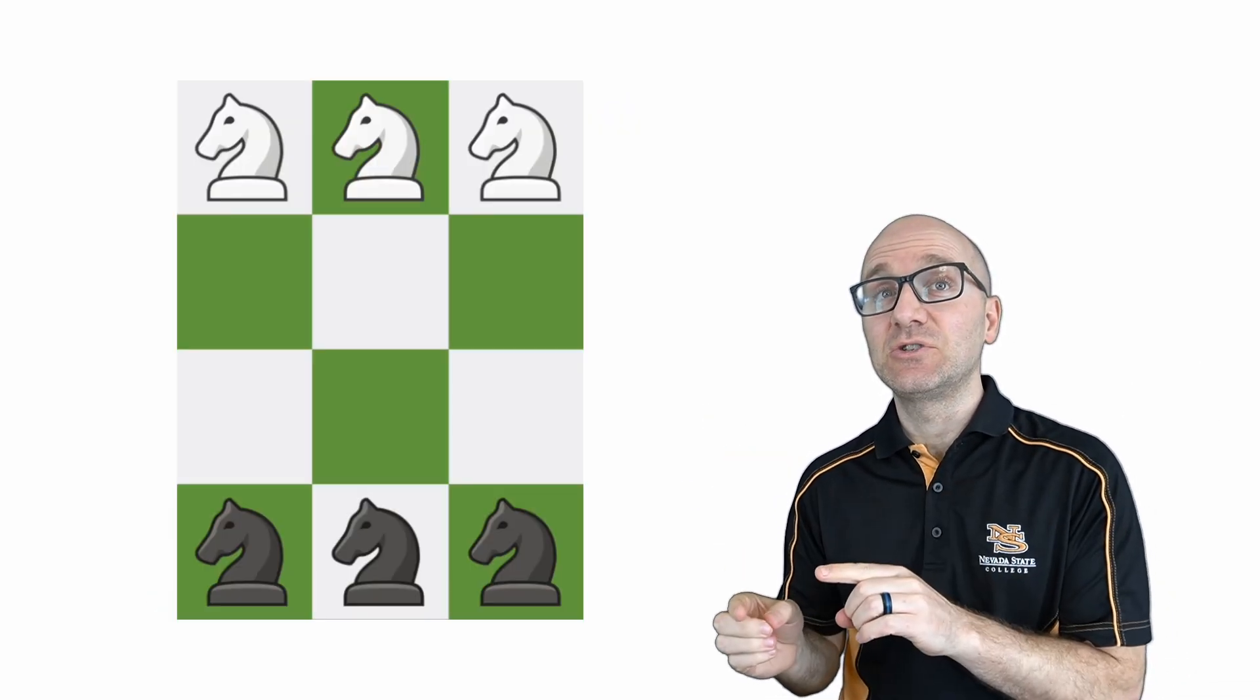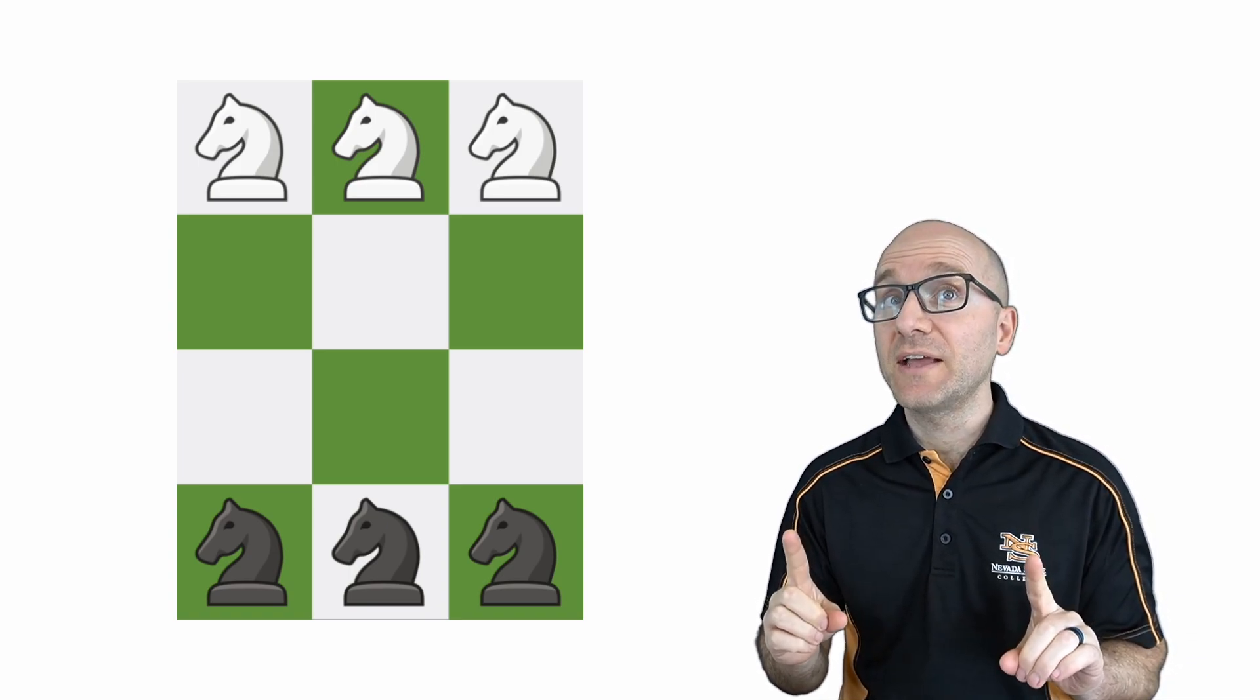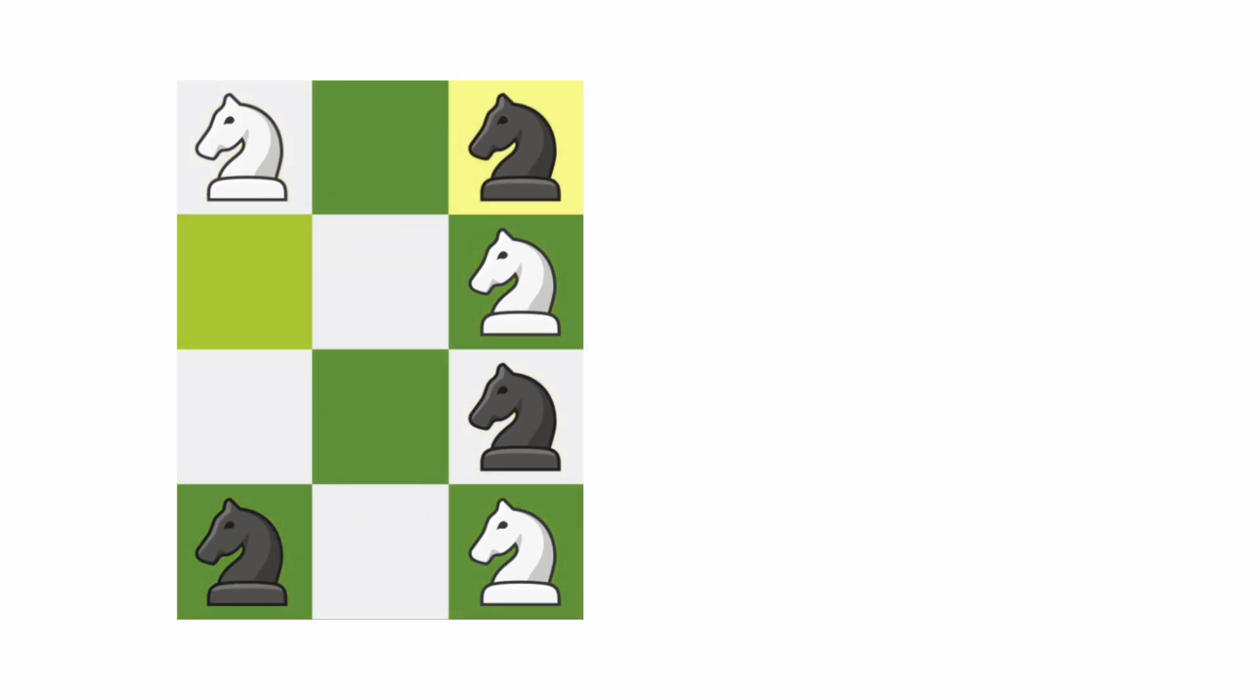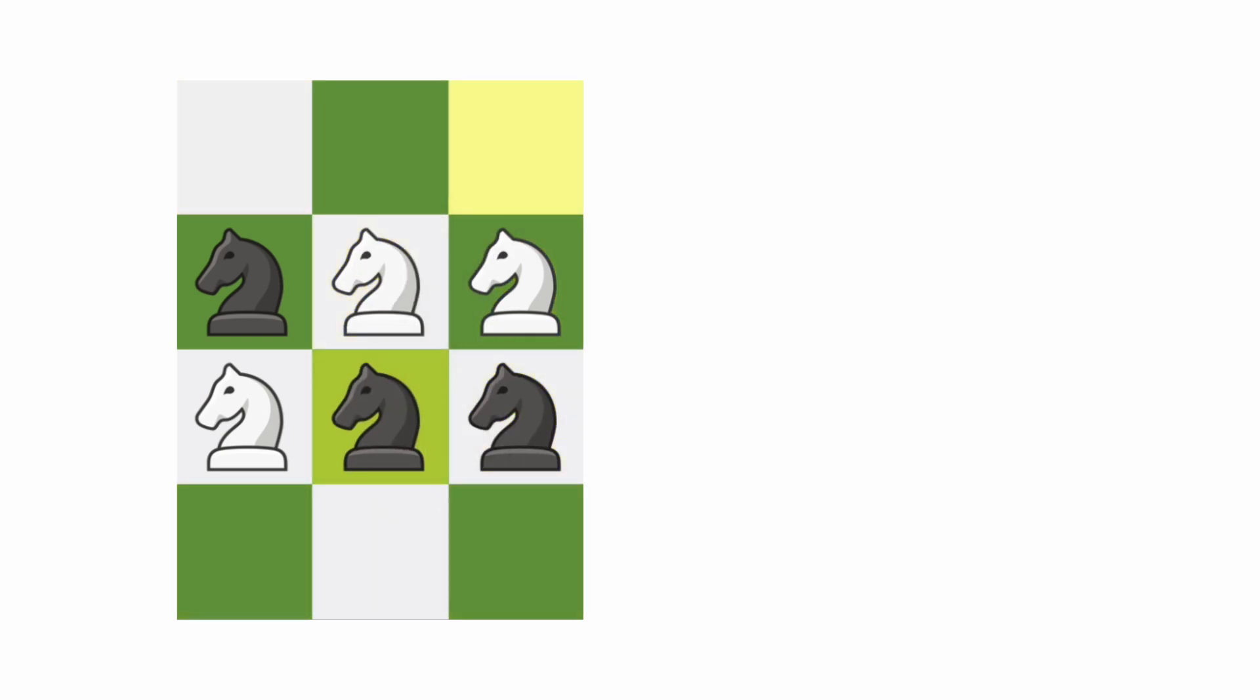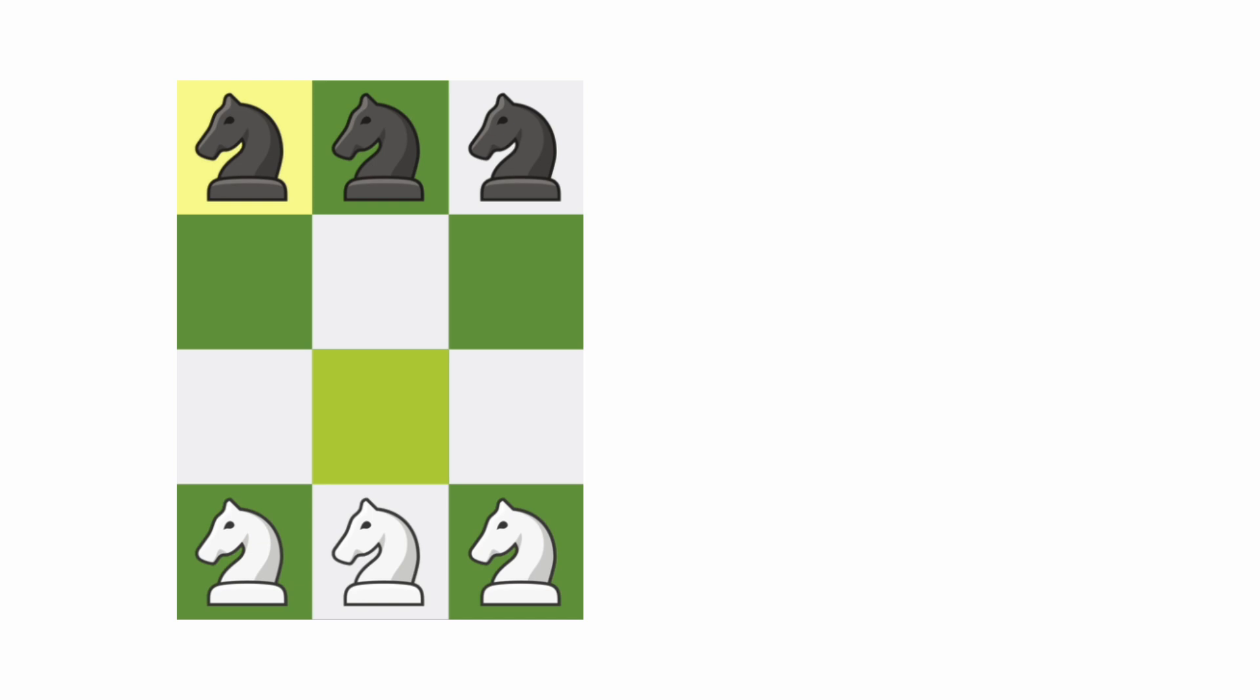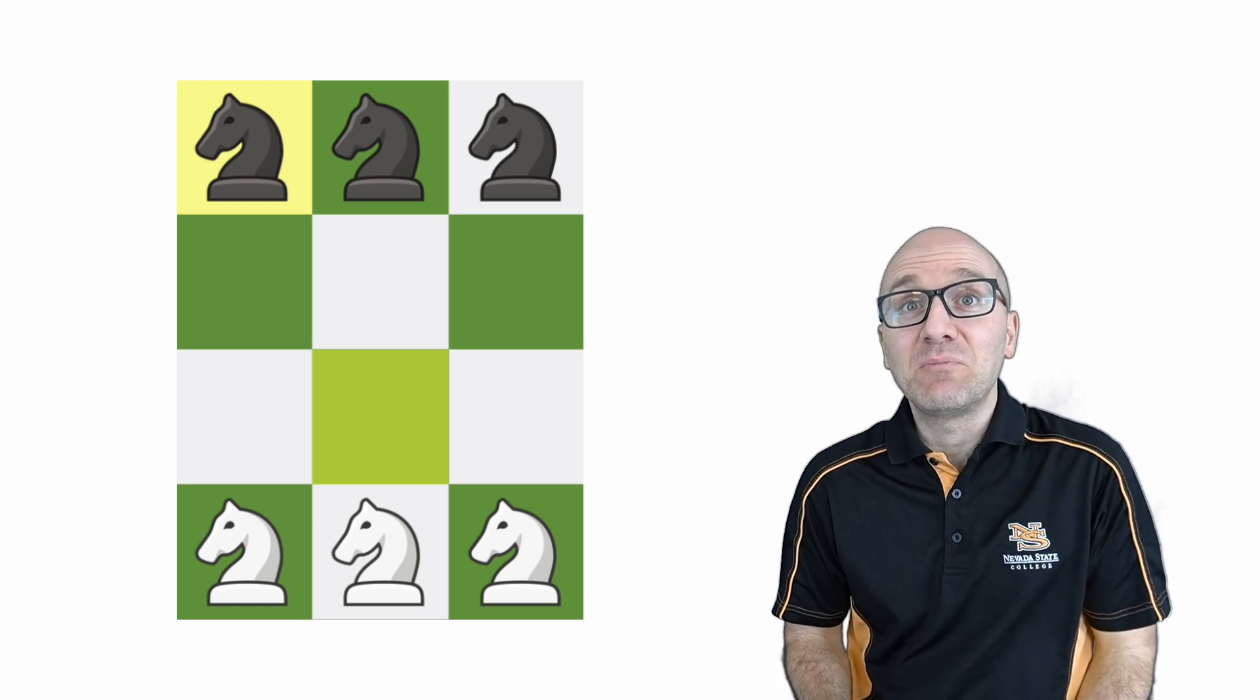Now we have to translate that solution back to the four by three grid. Watch closely to make sure that opposite colored knights don't attack each other. We did it! The black knights are on top and the white knights are on bottom.